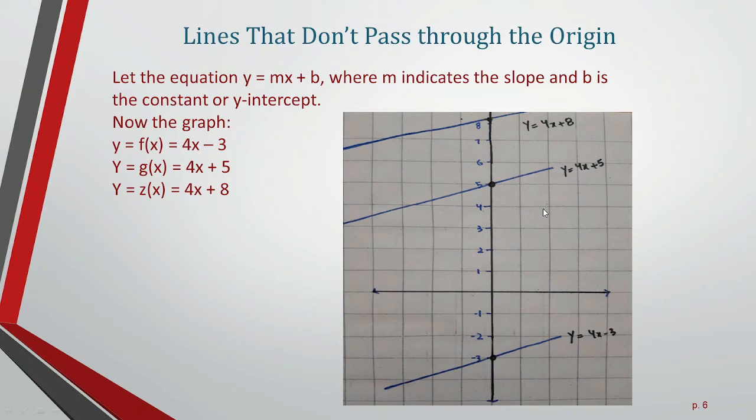For these equations, the slope is the same (4), and the y-intercepts are different: -3 for the first equation, +5 for the second, and +8 for the third.